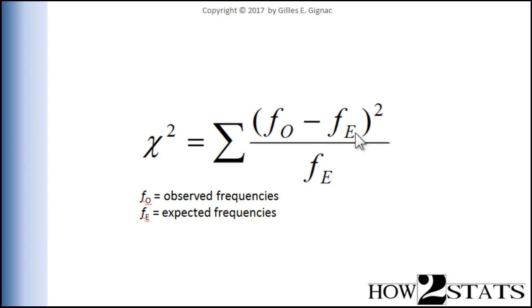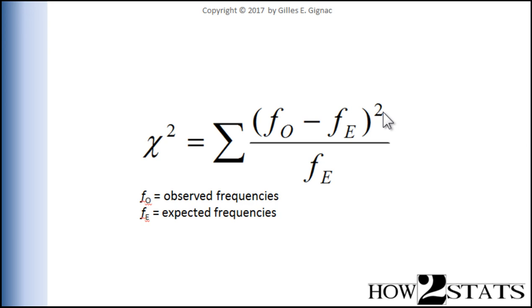You have to square that difference because you're actually going to do it twice in the formula — one side is going to be negative and the other positive, and you have to make sure you have positive values throughout. This is essentially why we call it Pearson chi-square: we are squaring both the positive and negative values, so there are no negative values in a Pearson chi-square analysis. It's only positive.